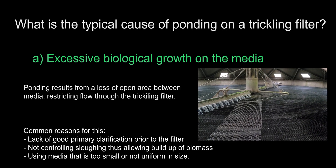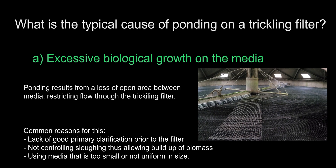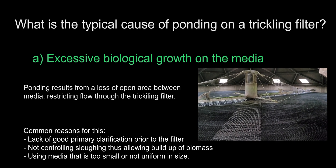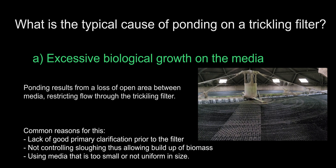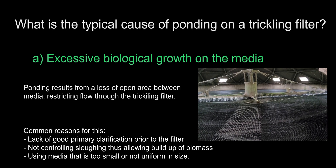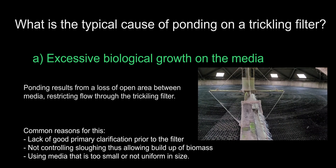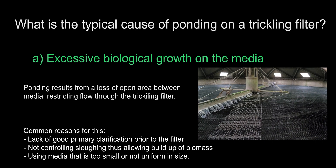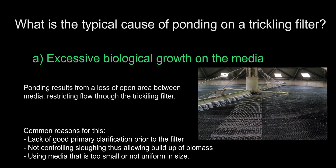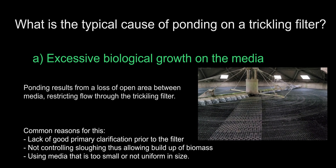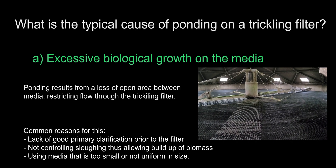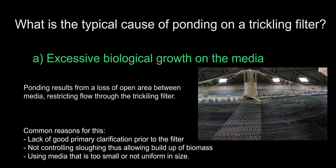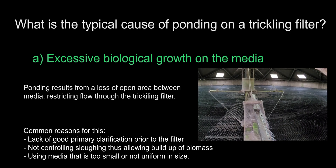Ponding occurs when influent can no longer pass through the filter media. The video displayed is of a working trickling filter, but as you can imagine, if that water was not draining through, it would sit on top causing issues. It's important to avoid too much biomass from accumulating on the filter media. This can be avoided by increasing the recirculation pump rate and slowing down the arm going around the filter, promoting the sloughing of excess biomass.